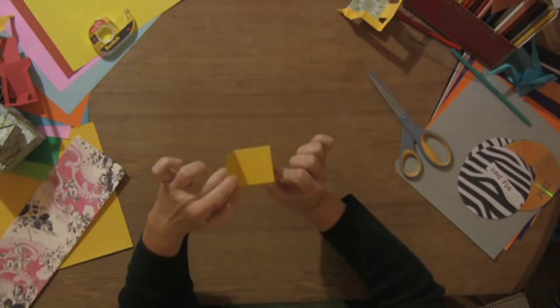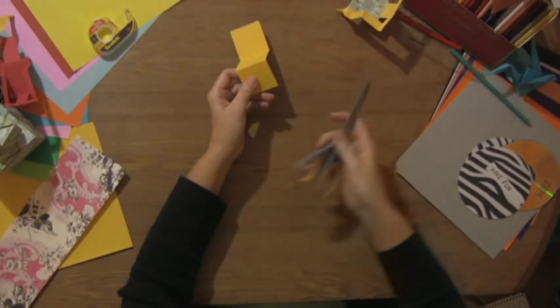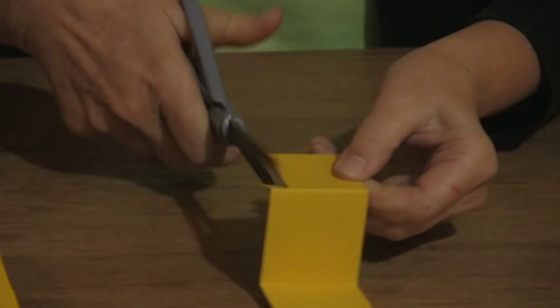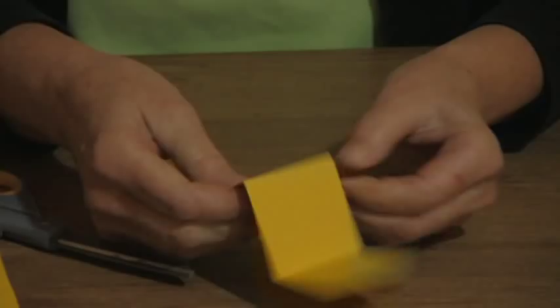This will be your front piece and what you're going to do is cut a little under a half inch. This will be one of your front legs and the same thickness on the other side. That will be your front legs.